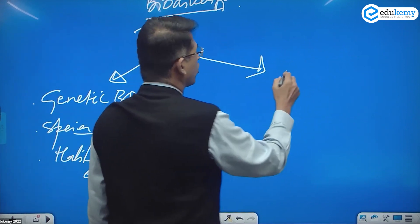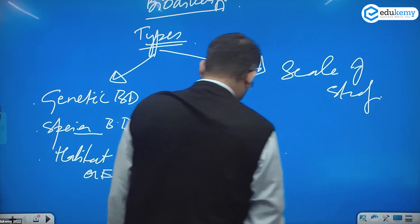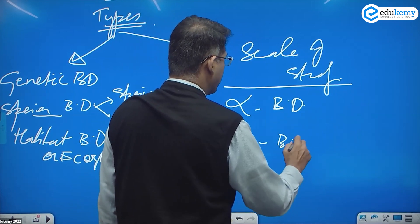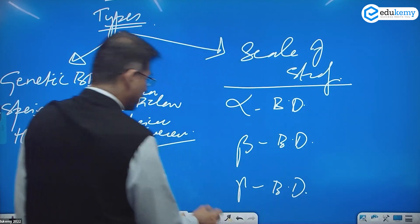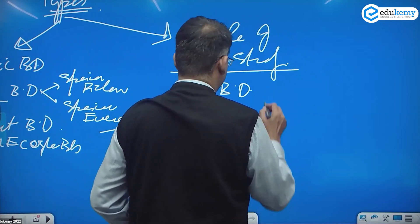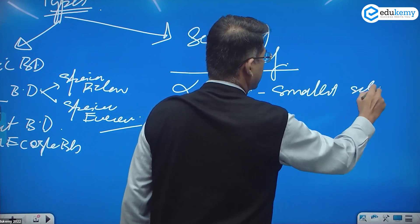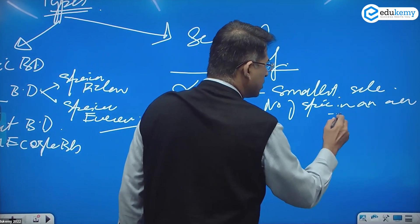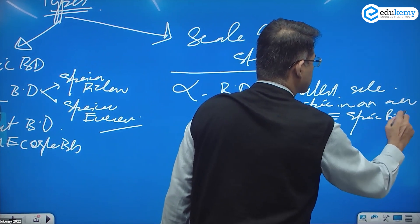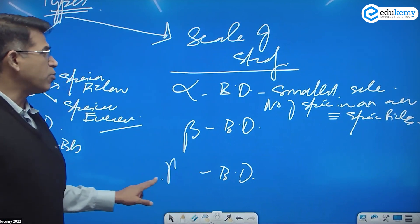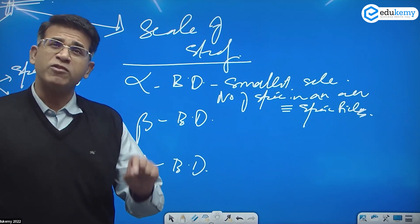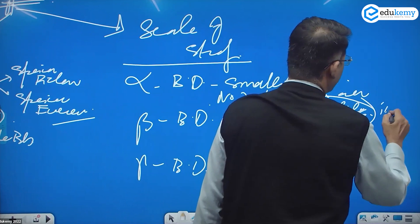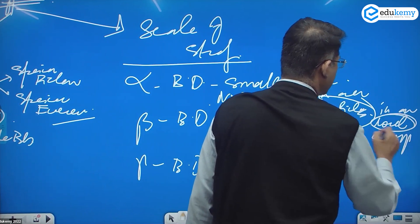The second classification is on the basis of the scale of study. Here we talked about alpha biodiversity, beta biodiversity, and gamma biodiversity. Alpha biodiversity is at the smallest scale — it is the number of species in an area, which is more or less the same as species richness, in a local ecosystem or within one community.